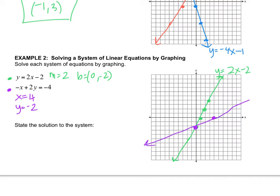The intersection is the answer. So the answer is 0, negative 2. Not the picture of the lines. It's the point where they cross.